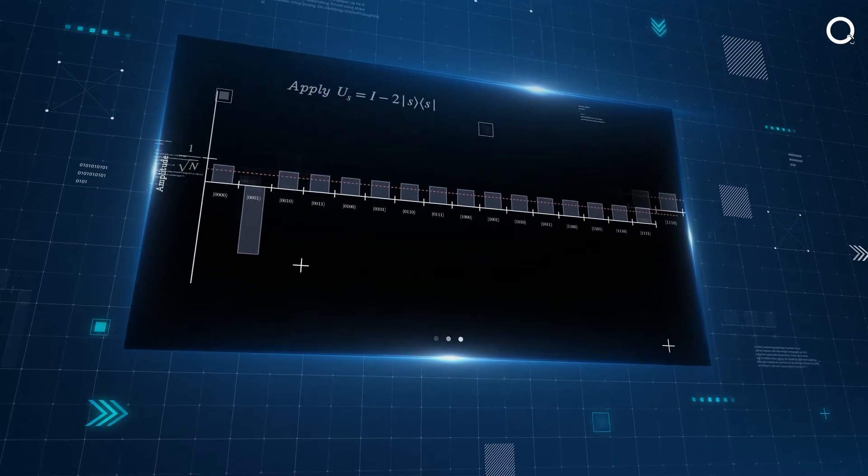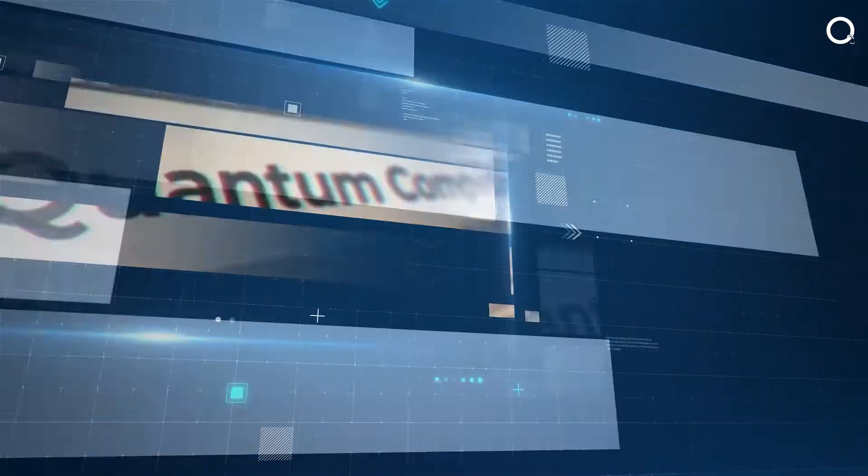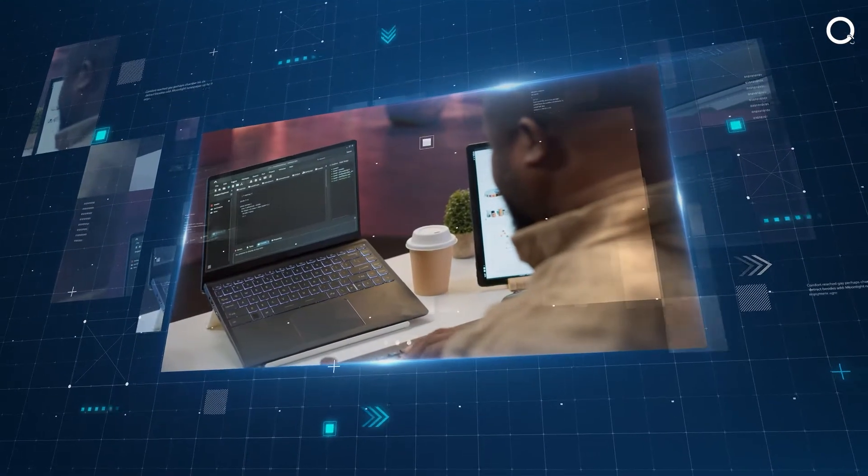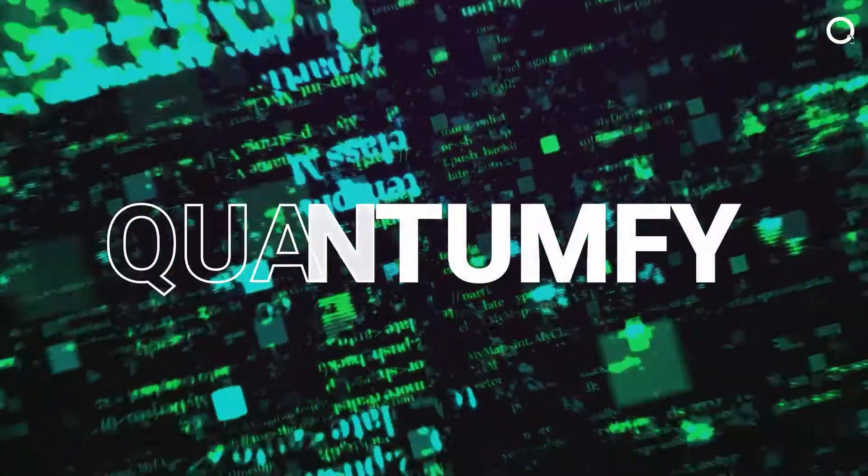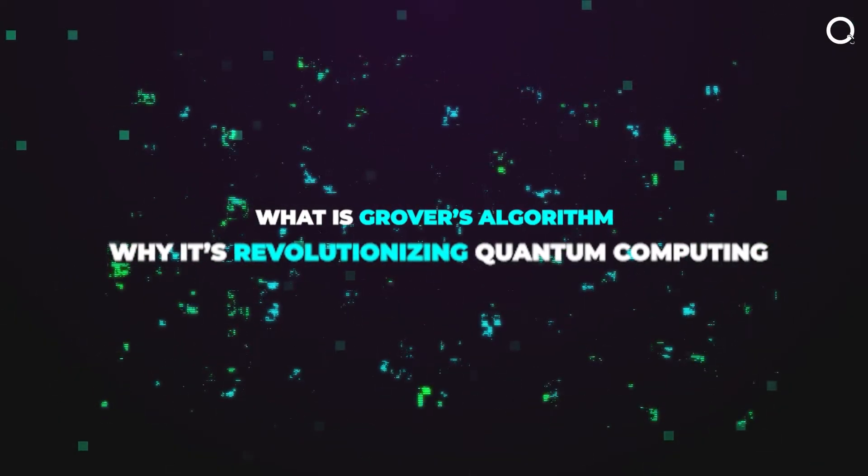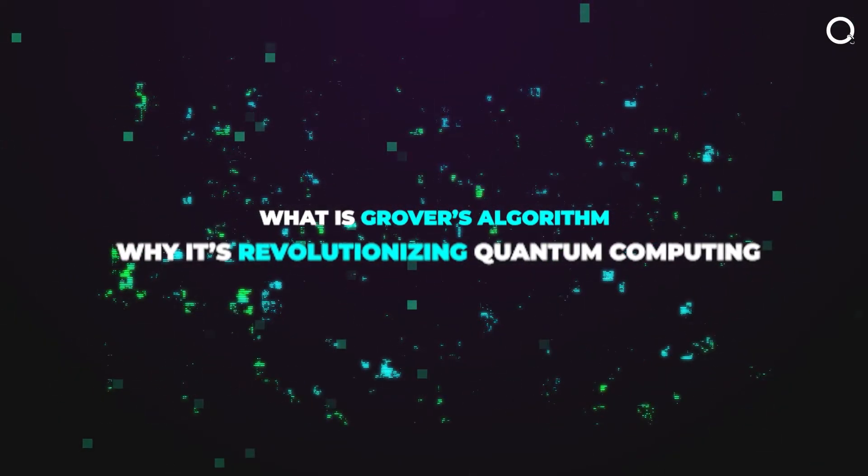This isn't just theoretical either. It's real and it's happening now. Today, we're going deep into Grover's algorithm, the quantum leap in computing that could revolutionize everything from cryptography to data mining. Hello and welcome back to Quantumfy. In today's video, we're diving into what is Grover's algorithm and why it's revolutionizing quantum computing.